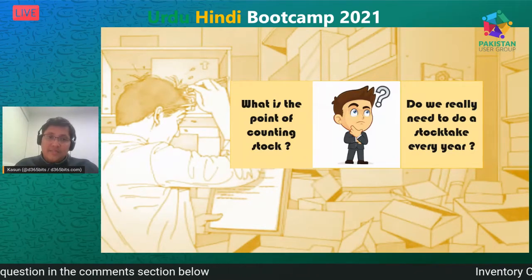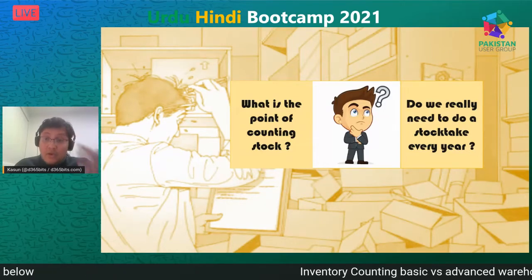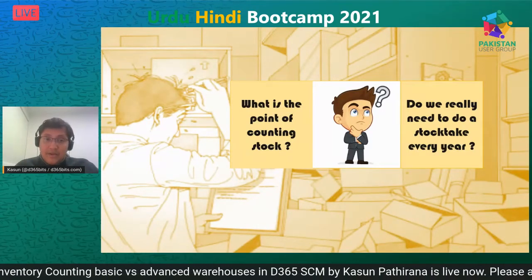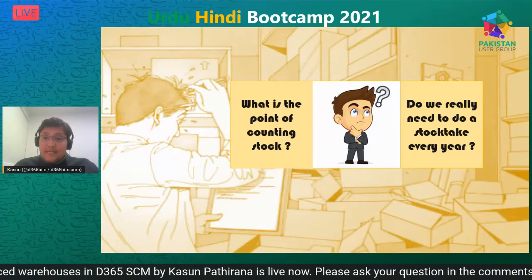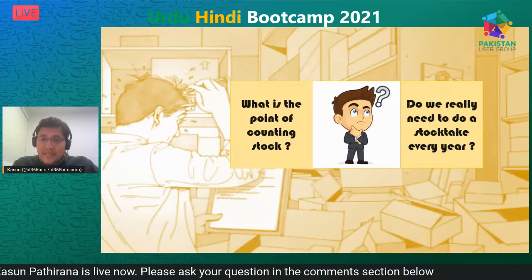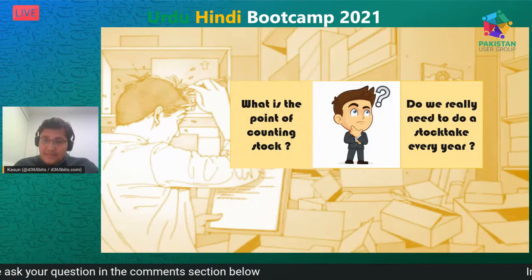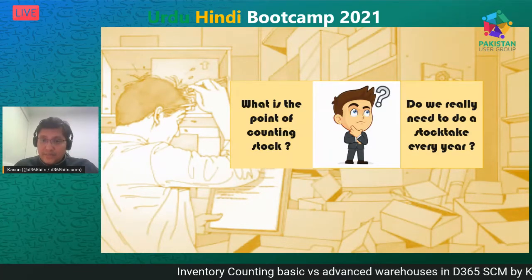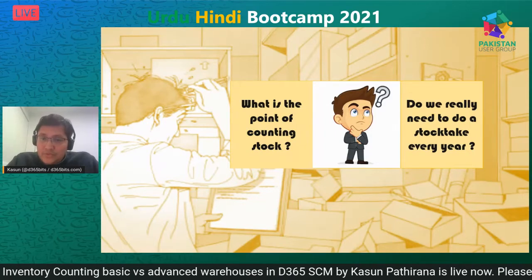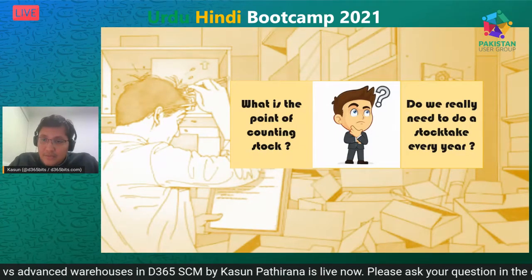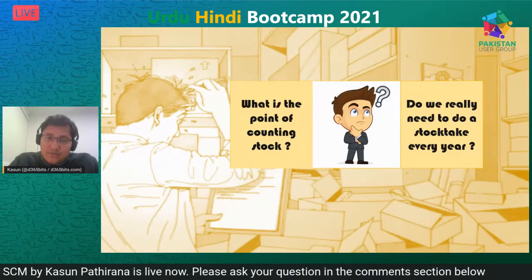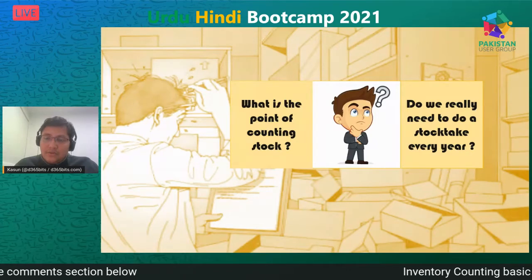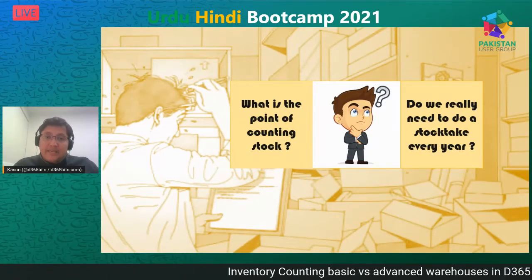Why might your physical stock not match your system? Maybe someone is stealing, or forgetting to record the delivery of new stock — there are various reasons. You might not have an accurate stock take, leading to inconsistencies. Stock counting brings your inventory back in line. It also helps in making better buying decisions throughout the year — if you identify and understand your stock levels, you can make the right decisions for your stock.